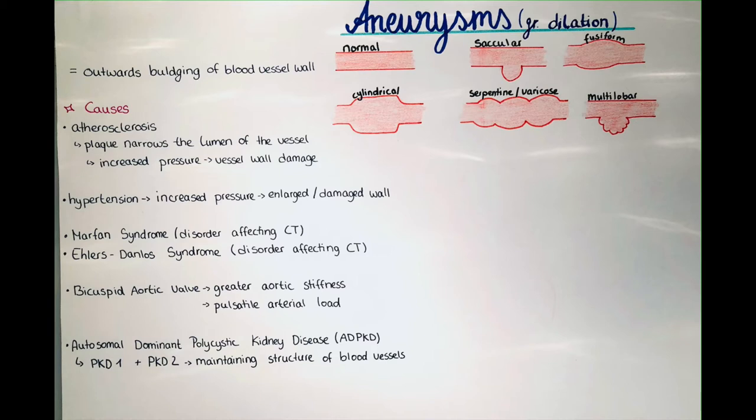Here I just want to mention the most important causes and explain how this approximately happens. Atherosclerosis is the formation of a plaque which narrows the lumen of a blood vessel. The blood then has to be pushed harder through the vessel to pass this narrowing, and this increased pressure can damage the vessel wall.